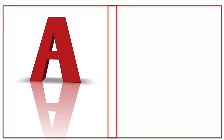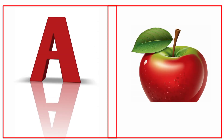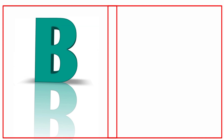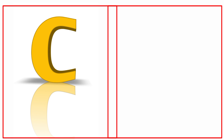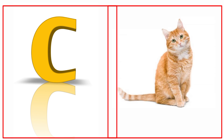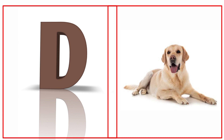A for apple. Apple means save. B for ball. Ball means gain. C for cat. Cat means billy. D for dog. Dog means kutta.